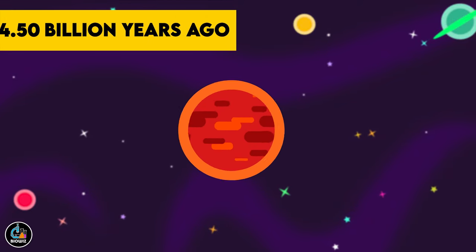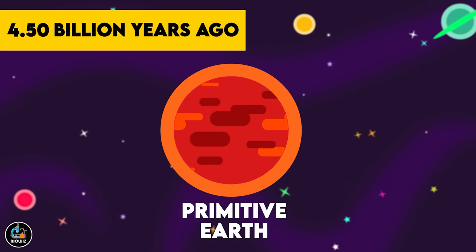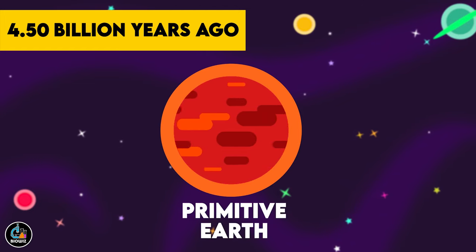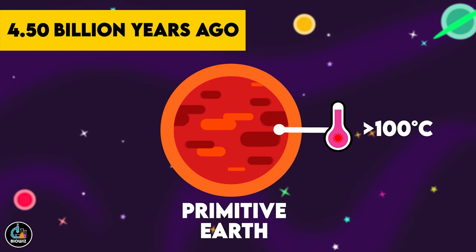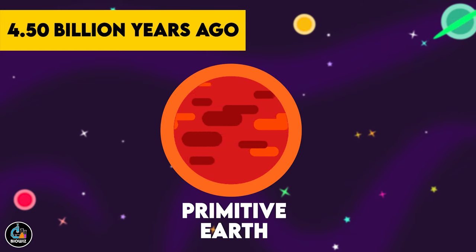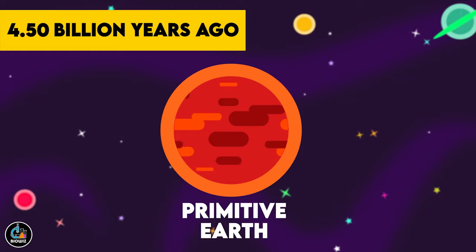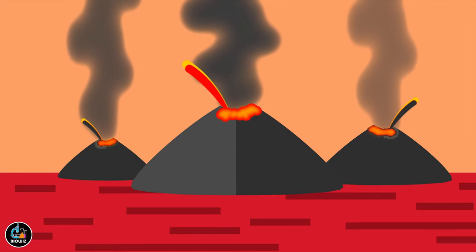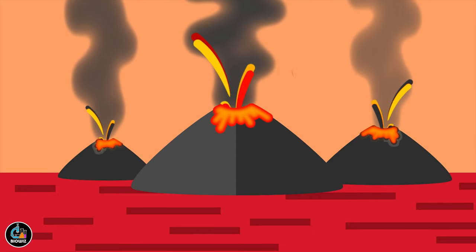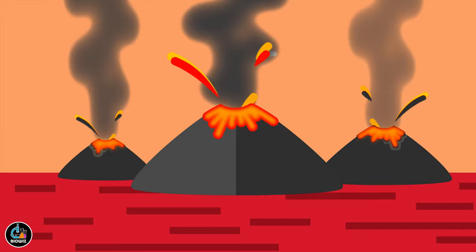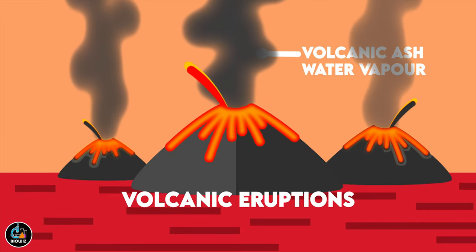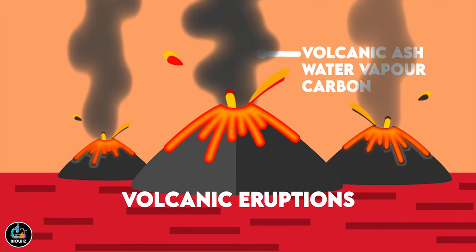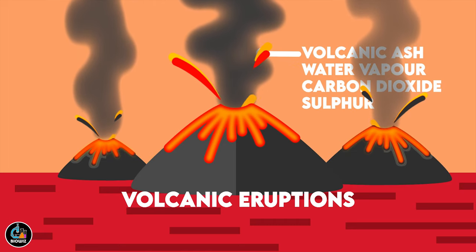Our Earth was formed approximately 4.5 billion years ago. The young Earth was very hot, having temperatures of more than 100 degrees Celsius. There were extensive volcanic eruptions releasing huge amounts of volcanic ash and gases like water vapour, carbon dioxide, sulphur dioxide, and hydrogen sulphide.